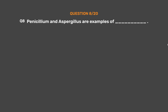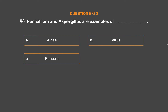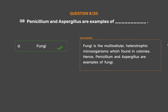Question number 8. Penicillium and Aspergillus are examples of which microorganism? Option A: Algae. Option B: Virus. Option C: Bacteria. Option D: Fungi. The correct answer is Option D, Fungi. Fungi are the multicellular, heterotrophic microorganisms found in colonies. Hence, Penicillium and Aspergillus are examples of fungi.